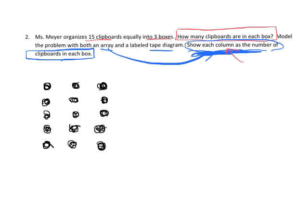And each column shows us how many clipboards we have in that box. So if I wanted to, I could skip count. 5, 10, 15. So I now have 15 clipboards. So that's the array.